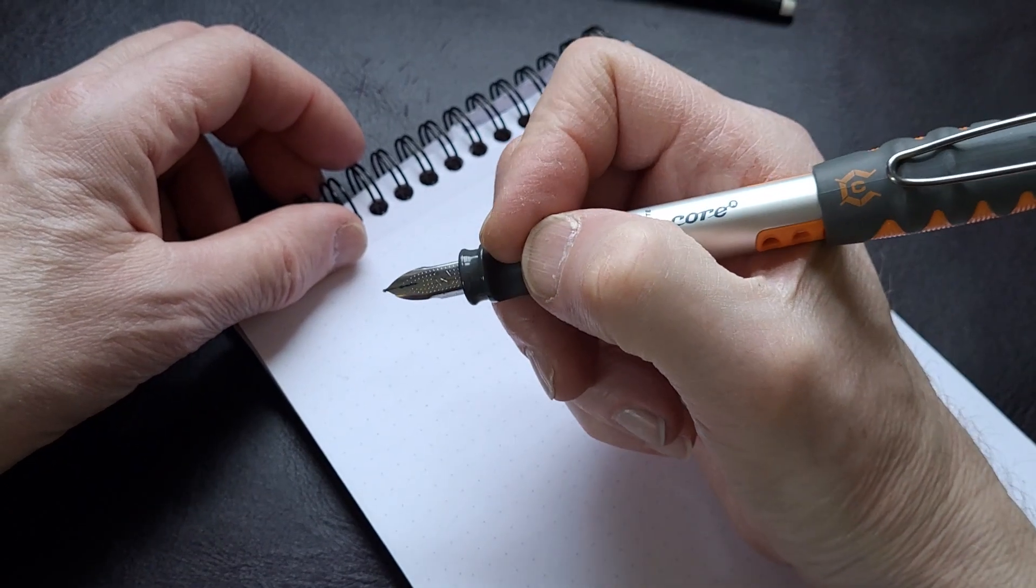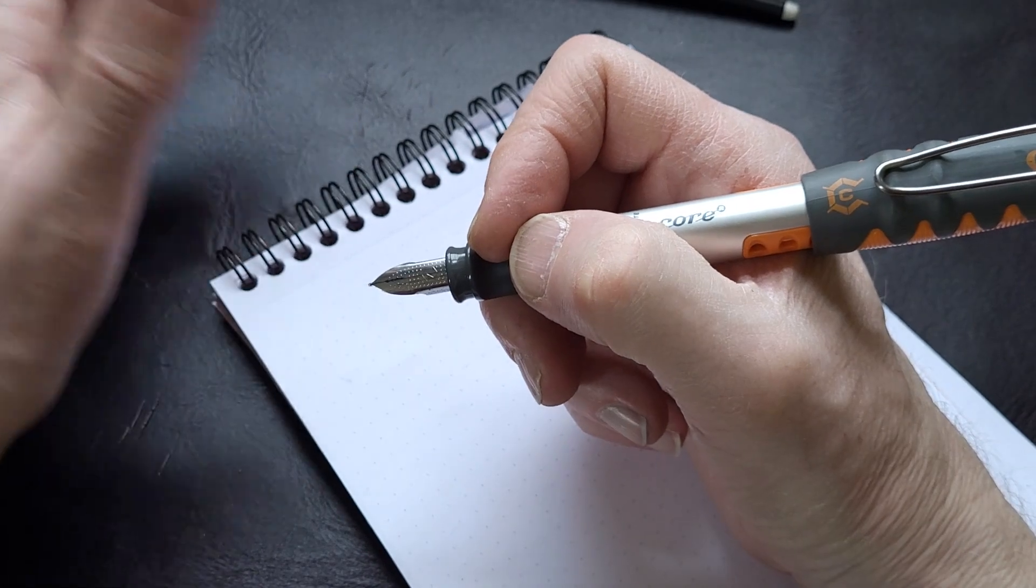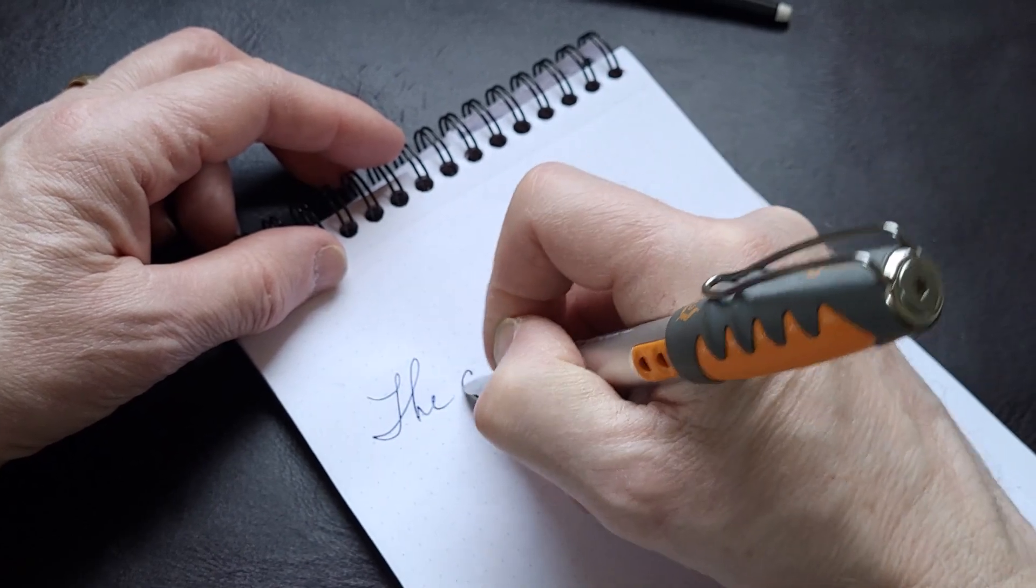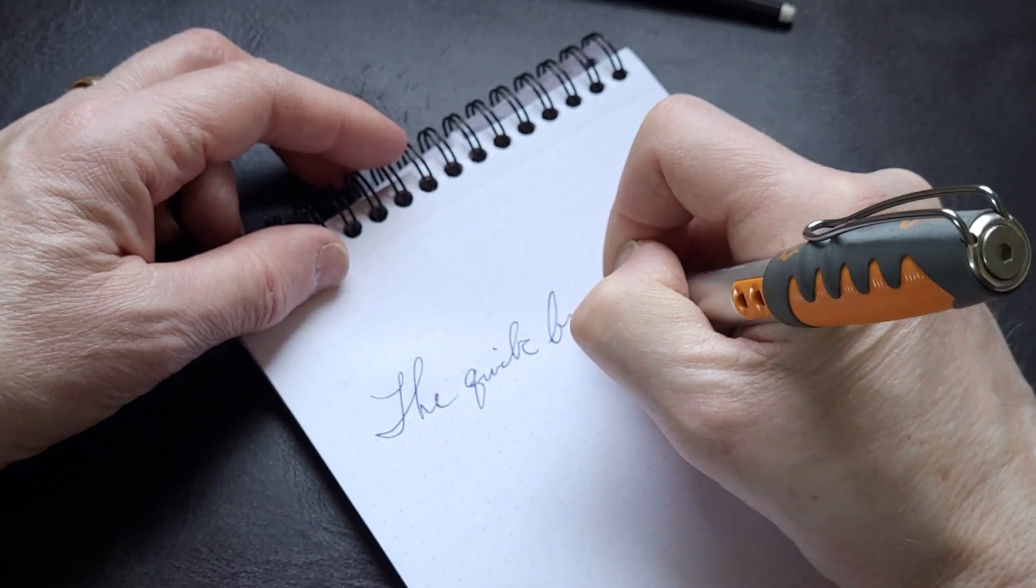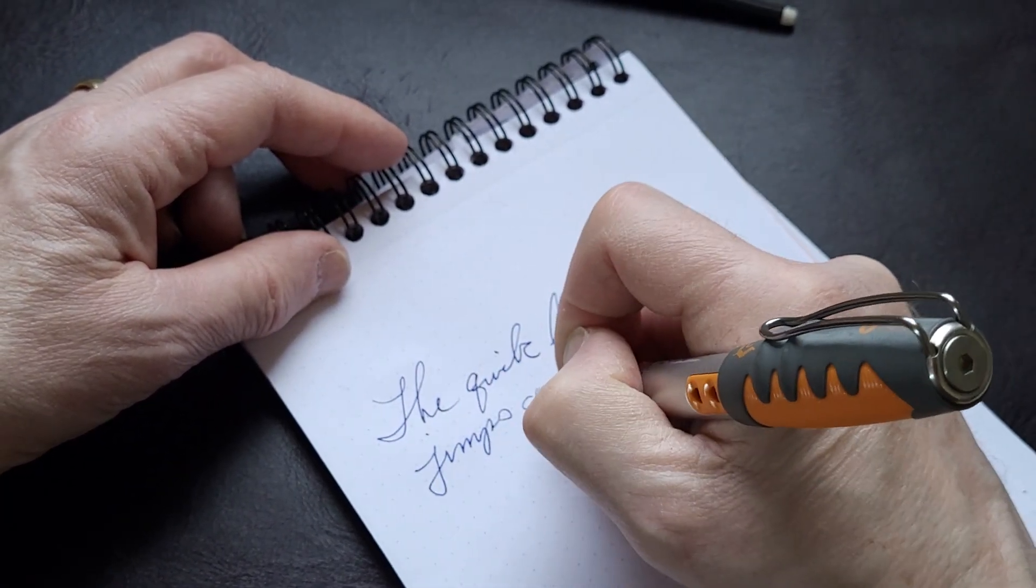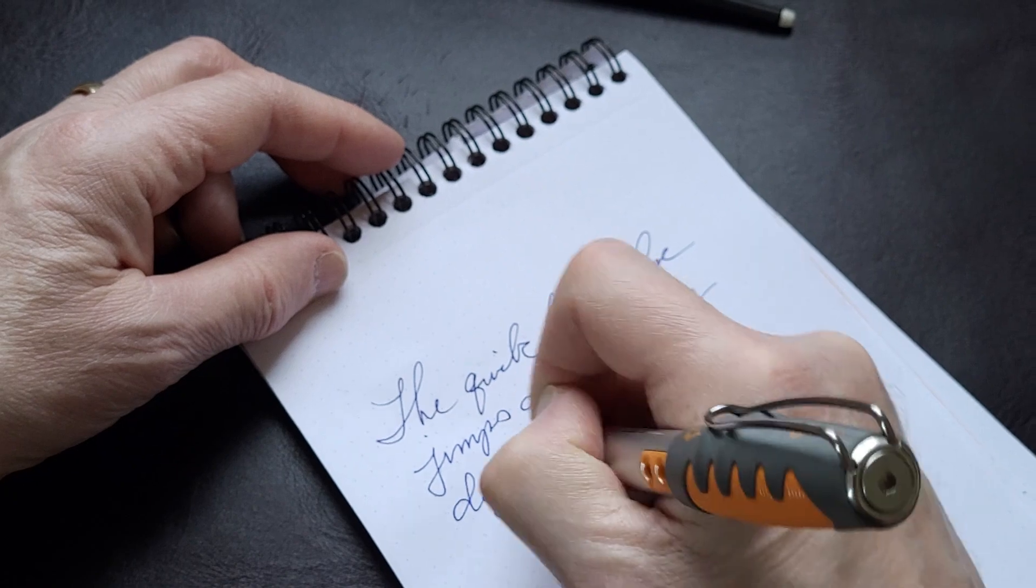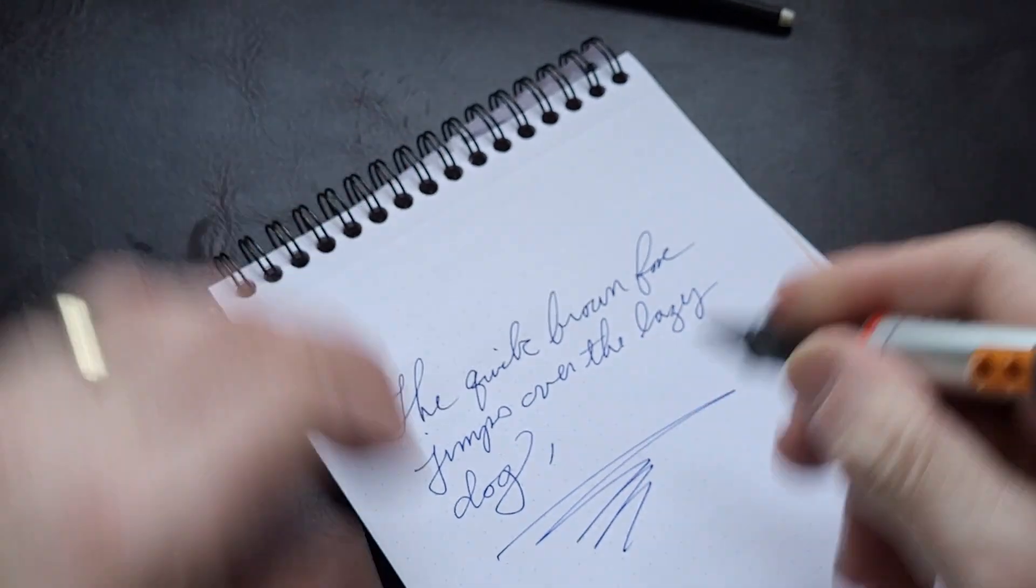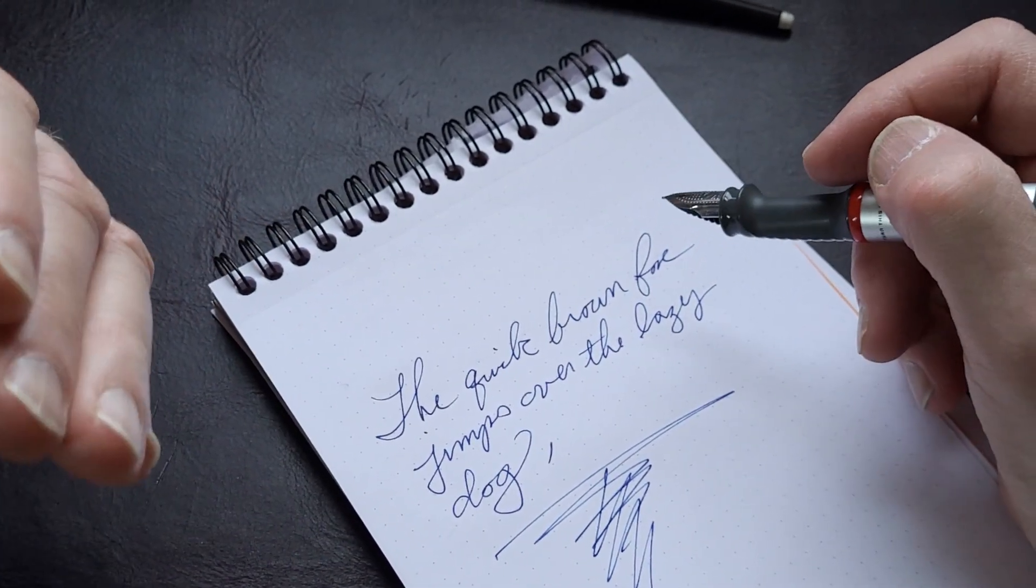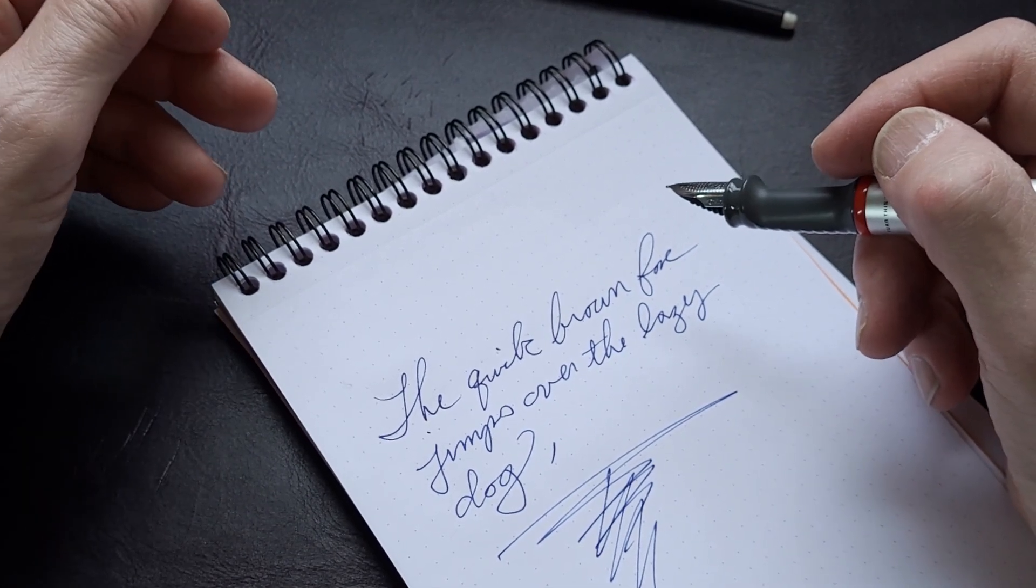And I'd say the nib says XL, but it probably is closer to a medium. And so I'm just going to do a little writing sample. The quick... Lazy dog. So, yeah, it's a very smooth writer. It writes a smooth line. There's a little bit of feedback, not much, and it does what it's supposed to do.